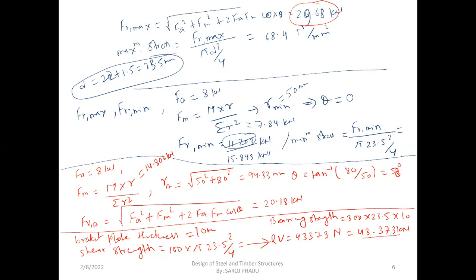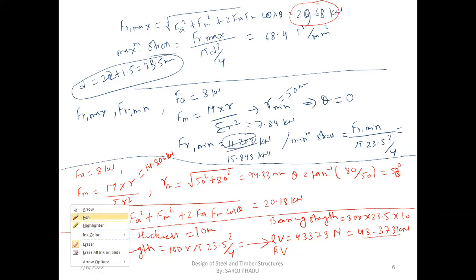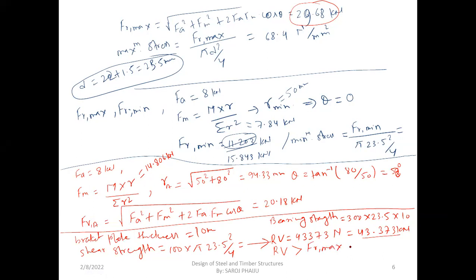Since the rivet strength value is greater than FR maximum (29.68 kN), the joint is safe.